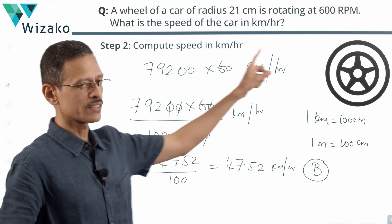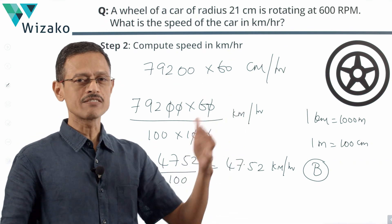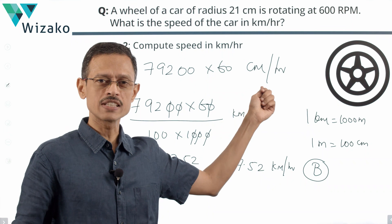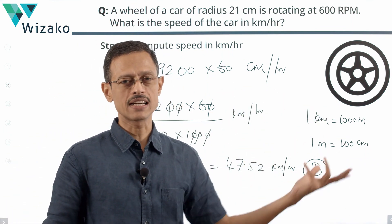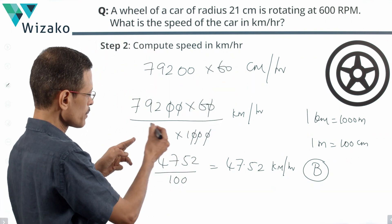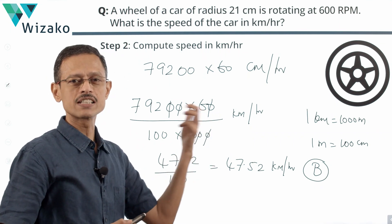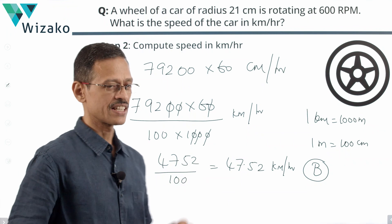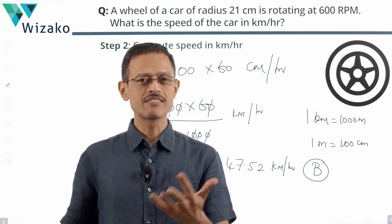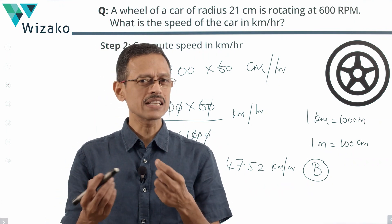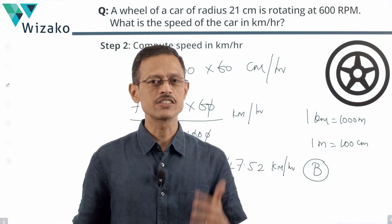To quickly recap: we found the speed in centimeters per minute, multiplied by 60 to get centimeters per hour, then divided by 100 to get meters per hour, and divided by 1,000 to get kilometers per hour. Choice B is the answer to this question. This is a rather easy 600-level question. Except for the calculation part, you should be able to nail it in about 45 seconds.